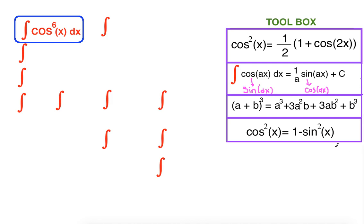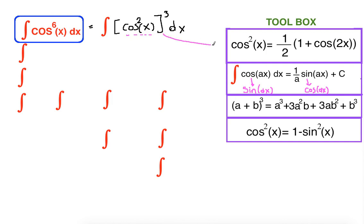Let's start. Our first step is to break cosine sixth of x into squared form so we can utilize the half angle identity. So we can break cosine sixth into cosine squared to the third power. Now we can substitute cosine squared of x with our half angle identity, so it will be one half times one plus cosine of 2x, to the third power, dx.